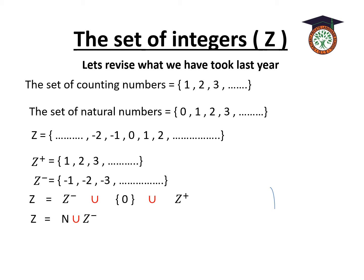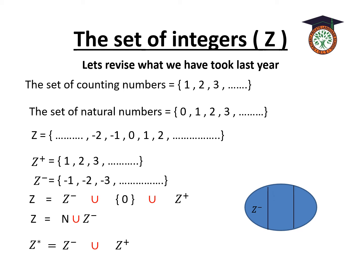Another way to express Z is: N (natural numbers, which include 0, 1, 2, 3…) union Z⁻. What about Z*? Z* includes Z⁻ union Z⁺ — without zero. On our diagram, we can see Z⁻, zero, and Z⁺. Z⁻ and Z⁺ together mean Z*.